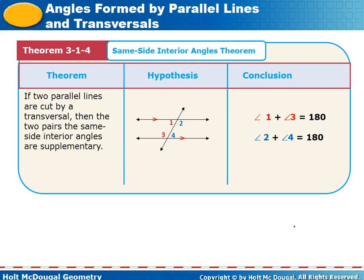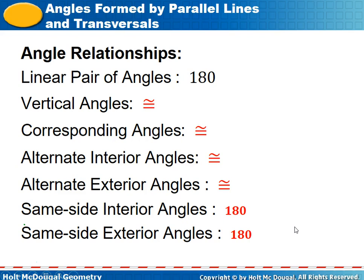The same-side interior angles are on the same side of the transversal and inside the parallel lines — angles one and three, and the pair on the other side. When you add them together, they're supplementary. The hint is that they're not the same shape: one's acute, one's obtuse. Summary: linear pairs and same-side interior angles are supplementary (sum = 180°). Vertical angles, corresponding angles, alternate interior angles, and alternate exterior angles are all congruent. Same-side exterior angles are also supplementary.